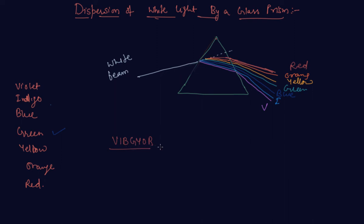Okay students, the band of colored components of a light beam is called its spectrum.